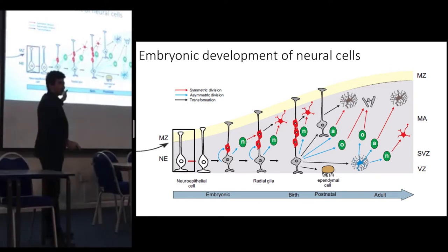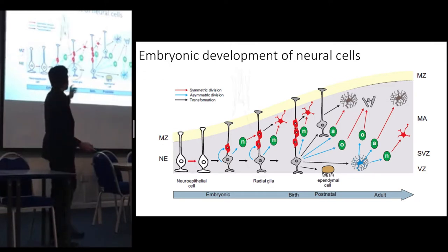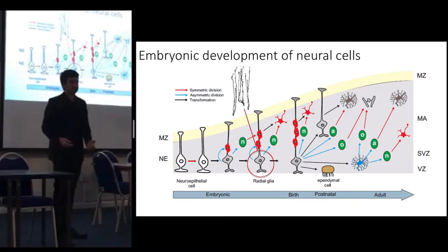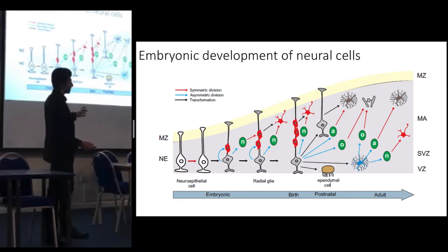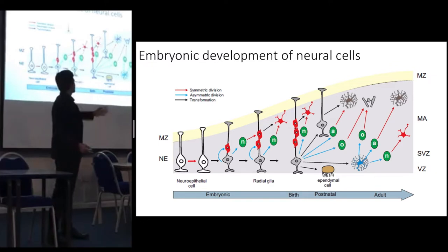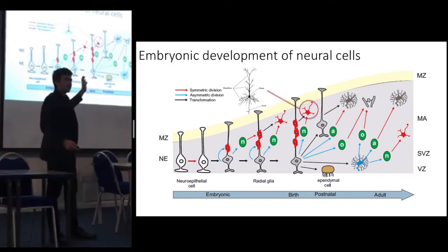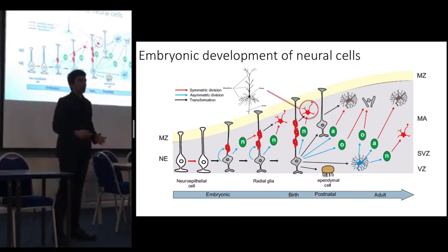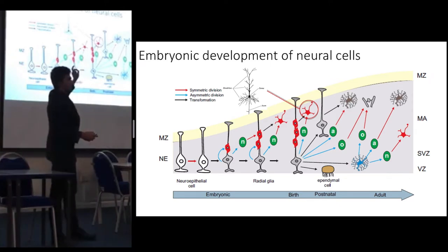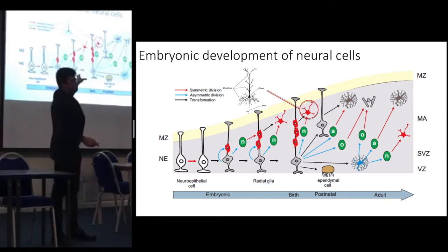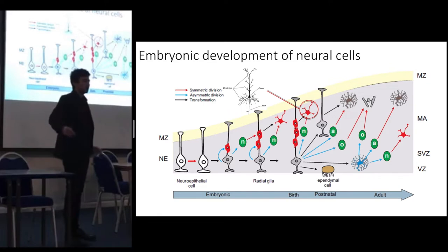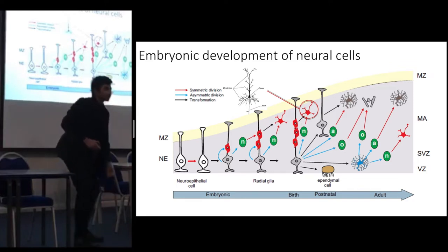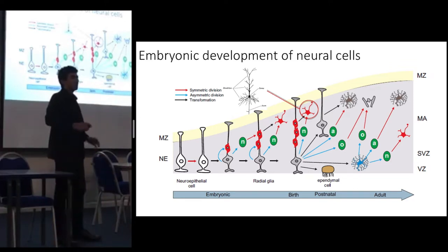Those neuroepithelial cells then multiply and transform into the radial glial cells, which are very instrumental in this process. You will also be able to see the forming neurons — these neurons bud off from the radial glia or from their neural progenitor cells in green. When formed, they climb the radial glial stalks until they reach their rightful position, at which point they extend their axons, and in that sense the brain builds itself upwards.